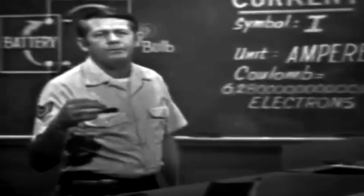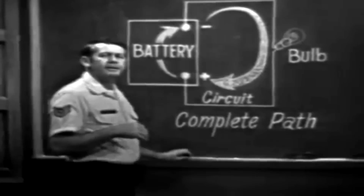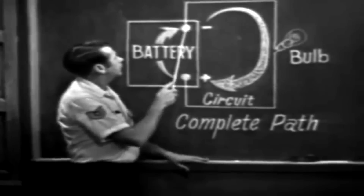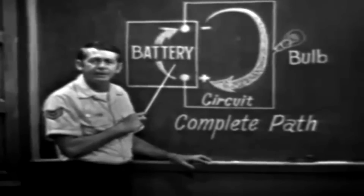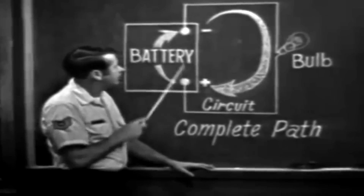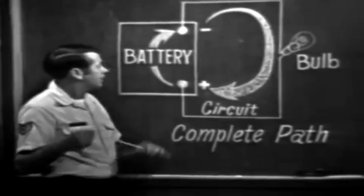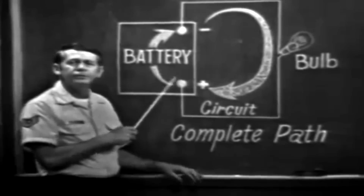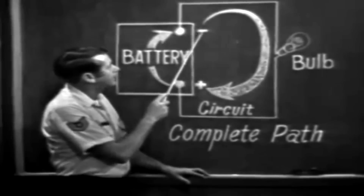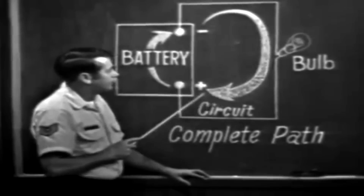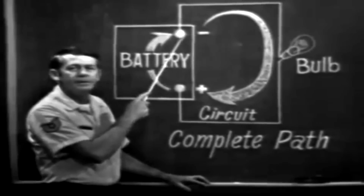Now remember, when I speak of current flowing from negative to positive, I'm referring to the current that flows outside the power source, or the current in the external circuit. Inside the power source — the battery in this case — current flows from positive to negative. This is a very important point, so be sure that you understand it, because later on you'll be using the current in this power source to calculate numerous things. Current flows in a continuous path from negative to positive in the external circuit, and from positive to negative in the power source.